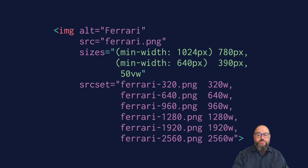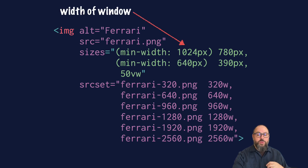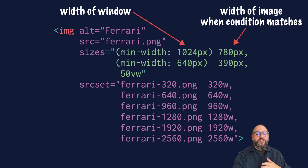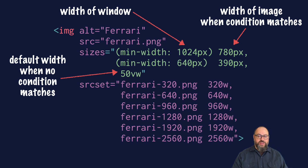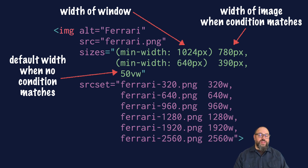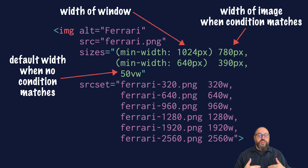The sizes attribute is a comma-separated list of media conditions paired with widths. For example, this first one says: if the viewport is at least 1024 pixels wide, then the image will be 780 pixels wide. The last item on your list does not need a media condition. If you provide a width and leave the media condition off, it will be treated as a default width to use if nothing else matches. You can also use relative widths, such as 50vw, which says the image will be 50% of the viewport width.